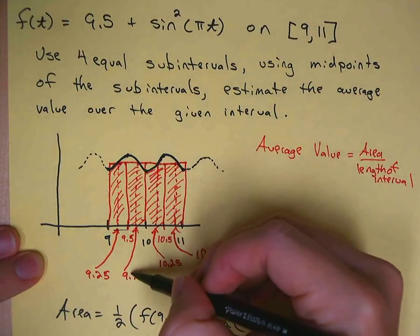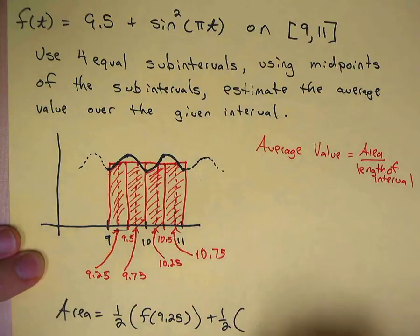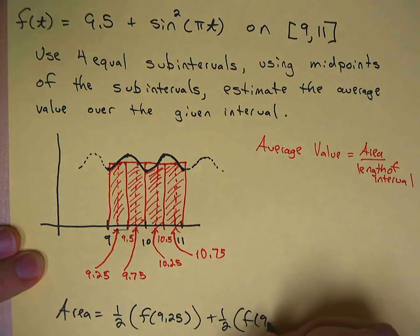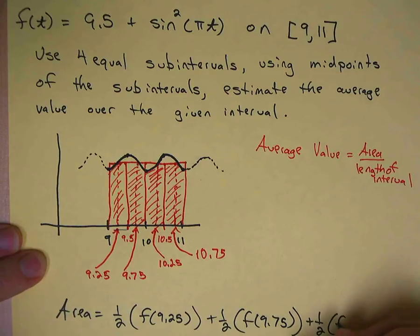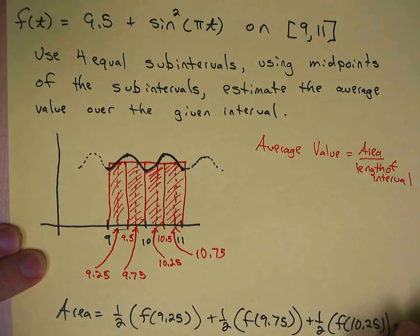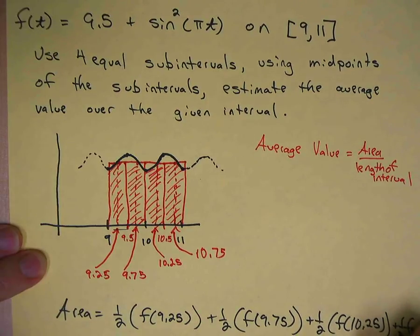Plus half times the next one, which would be f of 10.25, and the last one would be f of 10.75. So we plug these into the function.